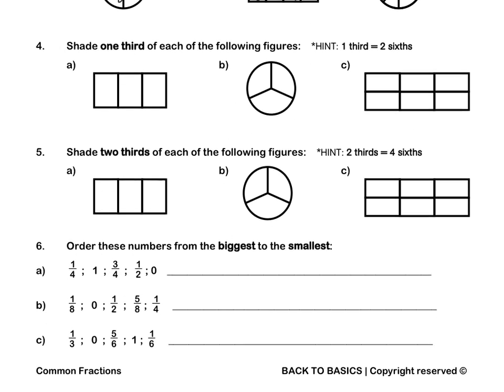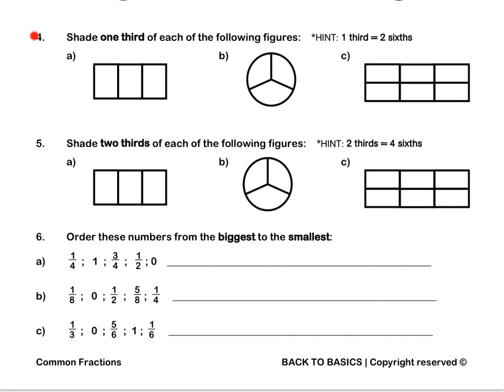Question 4 and question 5: Pause this video to complete these questions by yourself. Question 6: Order these numbers from biggest to smallest. A: my biggest number is 1, then 3 quarters, then 1 half which is equal to 2 quarters, then 1 quarter, then 0. Pause this video to complete question 6. Use the memo to mark this entire page. Remember to correct your answers.